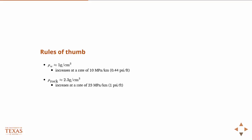So a couple rules of thumb. The density of water is defined as one gram per cubic centimeter, which is the density of water. It gives basically the definition of a gram. So this increases at a rate of roughly 10 megapascal per kilometer, or roughly 0.44 psi per foot. And the density of rock is 2.3 grams per cubic centimeter. This is obviously an average, not all rocks have the same density, but certainly in most sedimentary basins you're going to see on average a rock density of 2.3 grams per cubic centimeter. And that increases at a rate of 23 megapascal per kilometer, or conveniently one psi per foot.